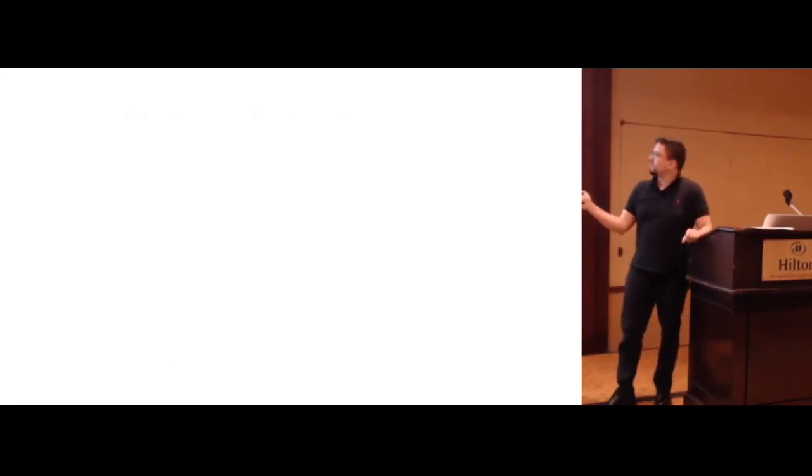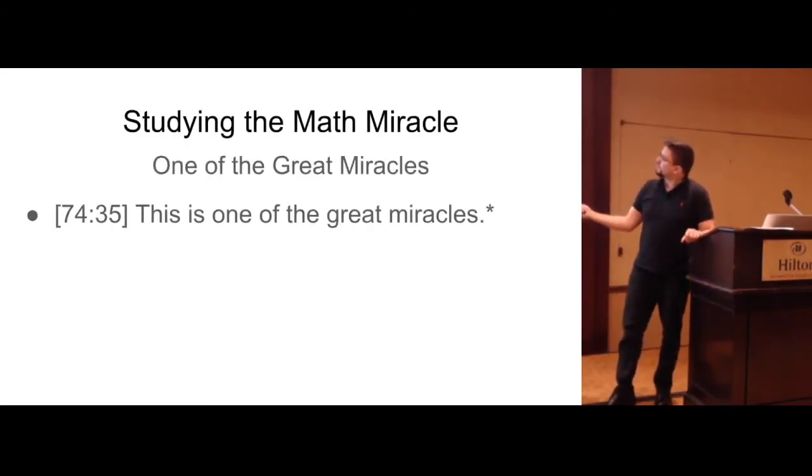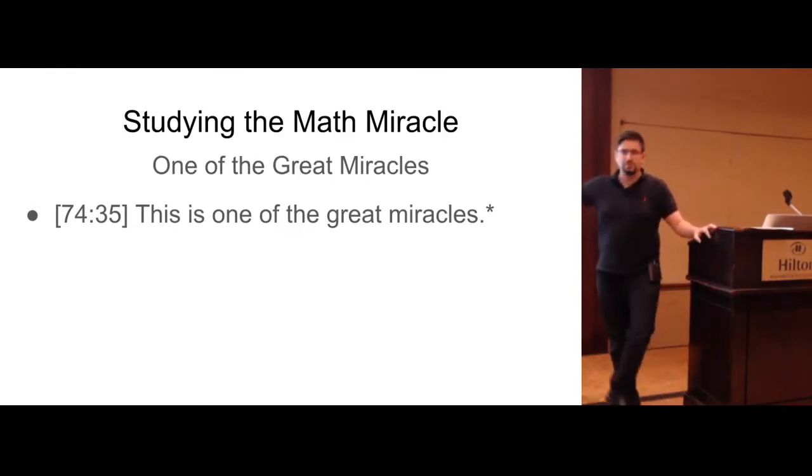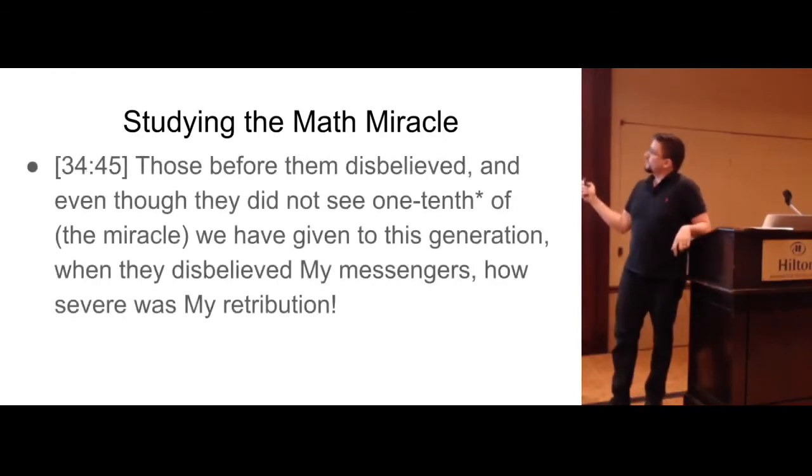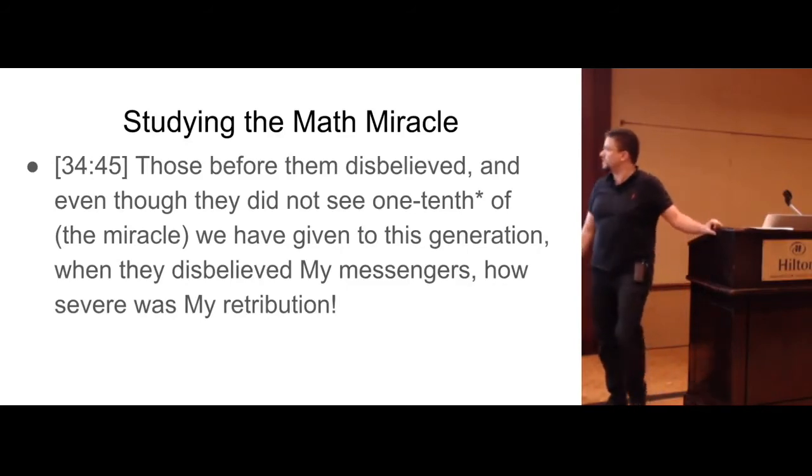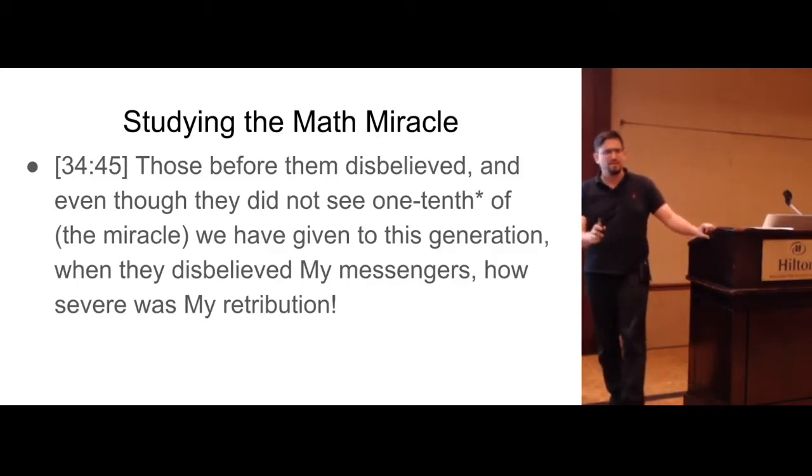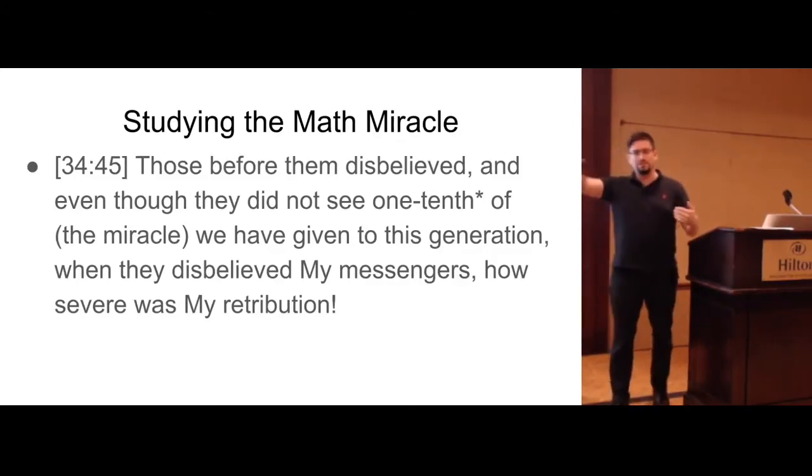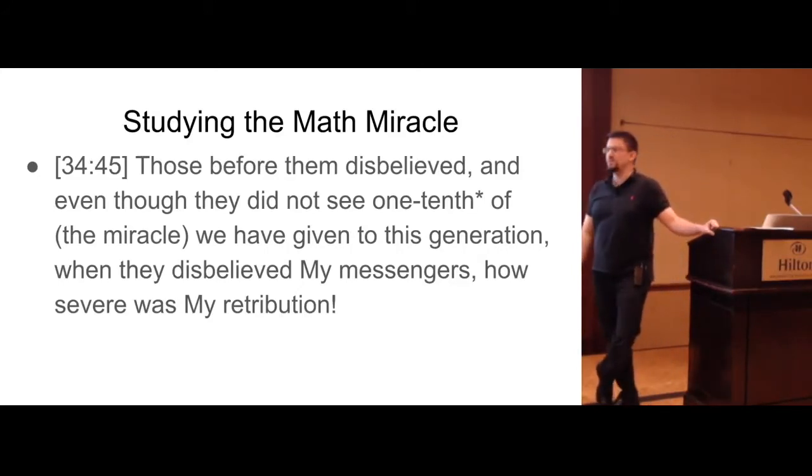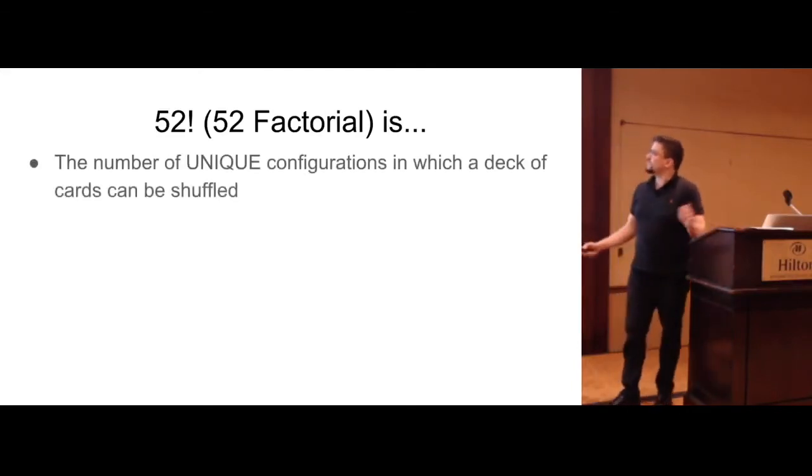Mashallah. So, again, I'll keep going through this. And, of course, this is one of the great miracles. So, we're looking at 52 factorial because math miracle. And here, 34:45. Those before them disbelieved, and even though they did not see one-tenth of the miracle we have given to this generation. When they disbelieved my messengers, how severe was my retribution? One-tenth. Now imagine that. The math miracle is more than ten times the miracles given to the previous generations. That's crazy. So, that warrants speeches, studying, and everything.